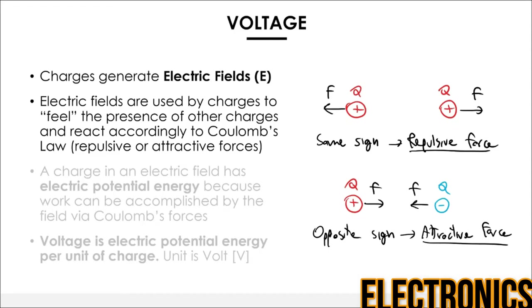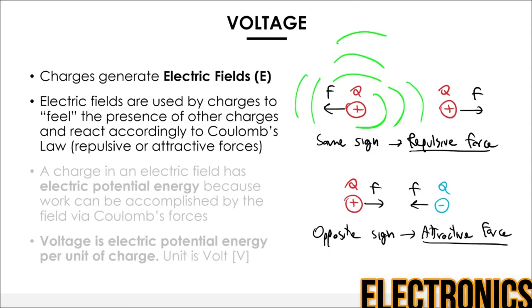Every charge emits an electric field in all directions around it. You can think of the electric field as a sort of sound wave — the intensity is higher close to the charge and becomes lower as you go away. The field spreads to an infinite distance but eventually becomes very tiny. The other charge Q, depending on its relative distance, will feel a certain electric field and will be subject to a corresponding force F. Electric fields are used by charges to feel the presence of each other and react according to Coulomb's law.